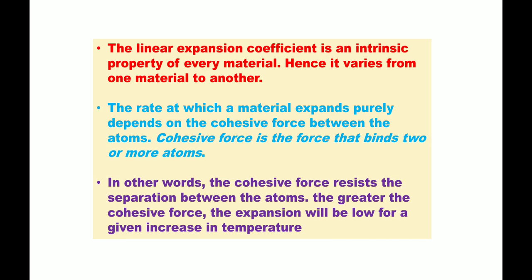The coefficient of linear expansion has great importance in thermal expansion. Its value depends only upon the nature of the substance and not on the dimensions of the rod, so its value varies from one material to another. The rate at which a material expands depends only upon the kind of bonding between atoms. If the cohesive force between atoms is strong, expansion will be low — this is what happens in iron, where the cohesive force is very strong and it expands less than other metals.